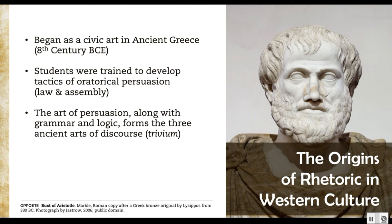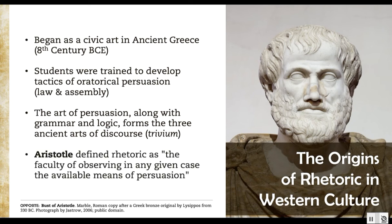The art of persuasion, along with grammar and logic, in ancient Greek society formed the three ancient arts of discourse, known as the Trivium, and this continued through the Middle Ages. The most prominent figure in ancient Greek rhetoric is Aristotle, who defined rhetoric as 'the faculty of observing in any given case the available means of persuasion.' This definition is unique and useful because it means that to perform rhetoric, we first need to observe and witness it. Rhetoric is something we learn from the culture around us, synthesize it, and then deploy ourselves in order to advance our own interests and arguments in the world.